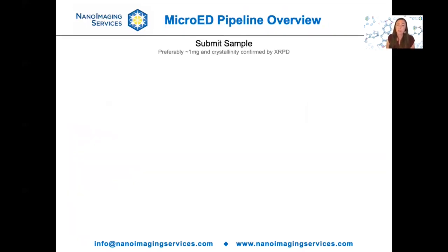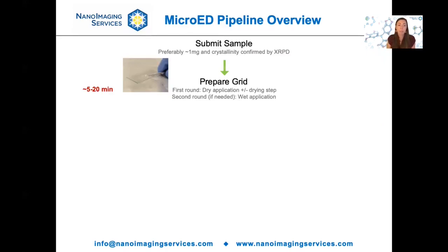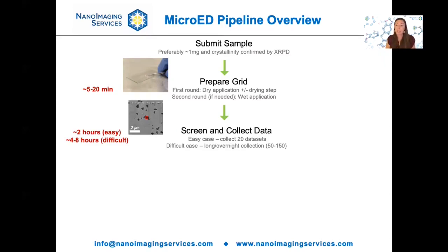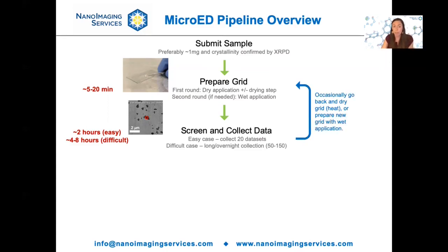Here at Nano Imaging Services, we've built a micro-ED pipeline for small molecule structure determination. This starts with clients submitting about a milligram of powdered sample, and we ask that clients confirm the sample is crystalline using powder diffraction if they're able to. We then prepare a grid, typically by dabbing a TEM grid against a pile of powder and tapping off the excess. We place this into a Glacios microscope — a 200 kilovolt microscope equipped with a Ceta-D camera — and use our automated software to screen for crystals and collect diffraction data. For an easy case, we collect about 20 data sets in roughly two hours; for more challenging cases, we set up an overnight collection of about 150 data sets in eight hours.